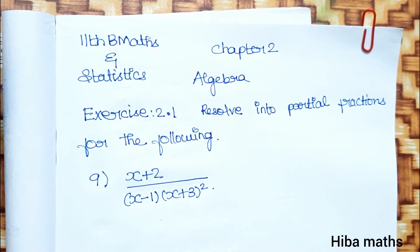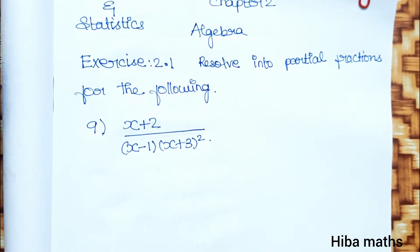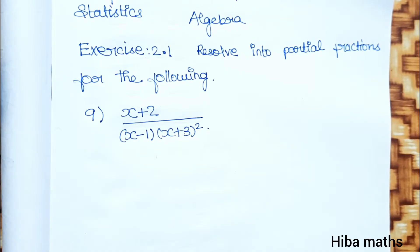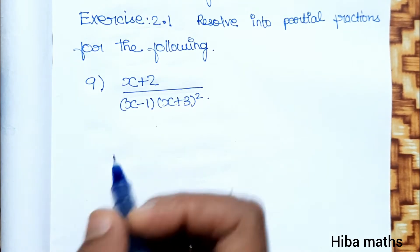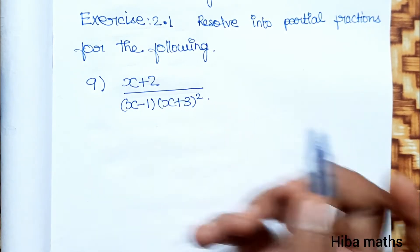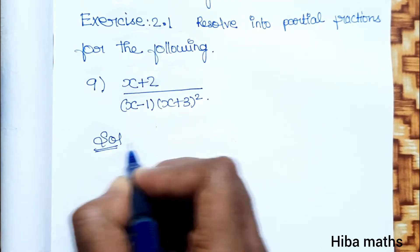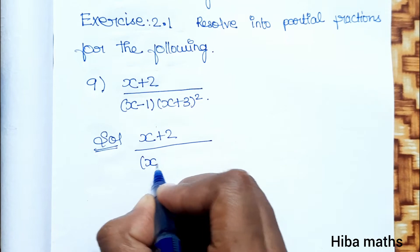Hello students, welcome to Hibamax 11th Standard Business Maths and Statistics, Chapter 2 Algebra, Exercise 2.1 — Resolve into Partial Fractions. For the 9th question, we will solve x plus 2 divided by x minus 1 into x plus 3 whole square. Since there is a repeated factor in this sum, this is Type 3.